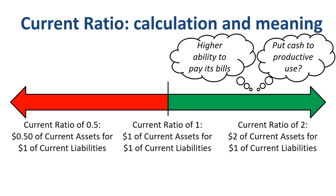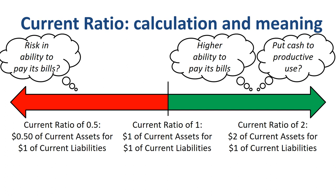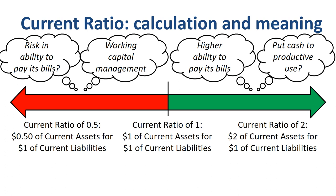Is a current ratio lower than 1 necessarily a bad thing? The ability to pay bills might be lower, but a current ratio below 1 could also be a sign that the company is very good at managing its working capital — keeping receivables and inventory low, and payables high. It's the story behind the ratio and the numbers that is important, and that's what we are diving into next.